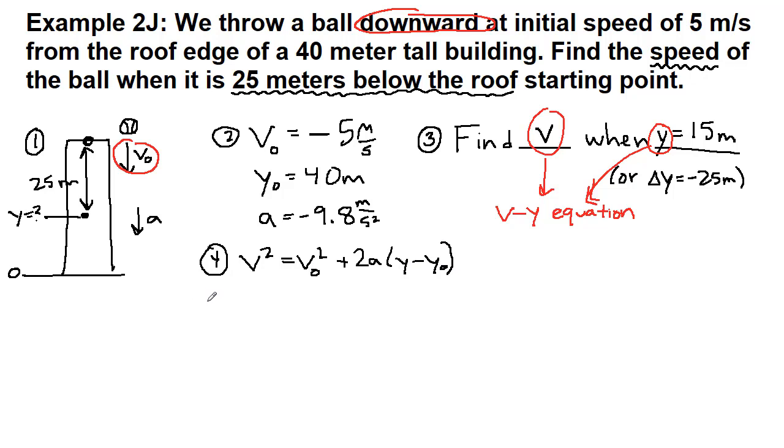And now we get to the math. So step five is the math part. V is the thing we're looking for, so it stays a letter. The initial velocity is negative five, that gets squared.